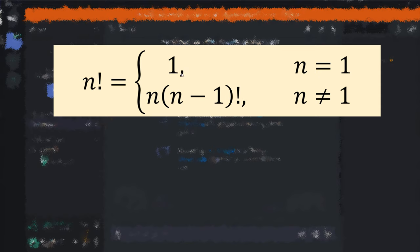1 is going to be the returning value, and on the other case if our number is not equal to 1, then the factorial of our number is going to be that number times that number minus 1 factorial.